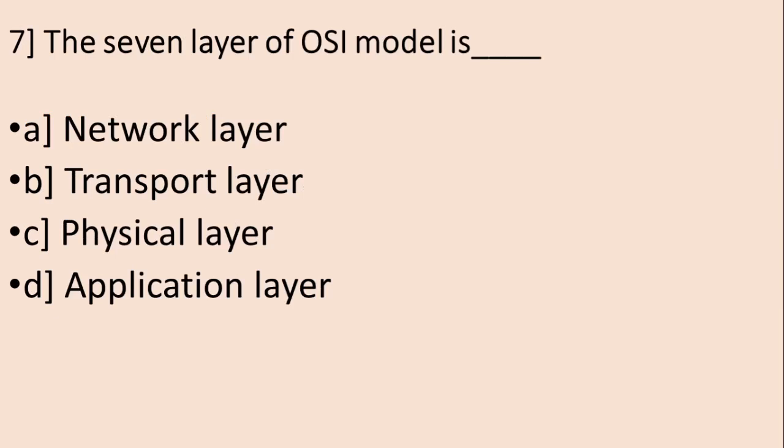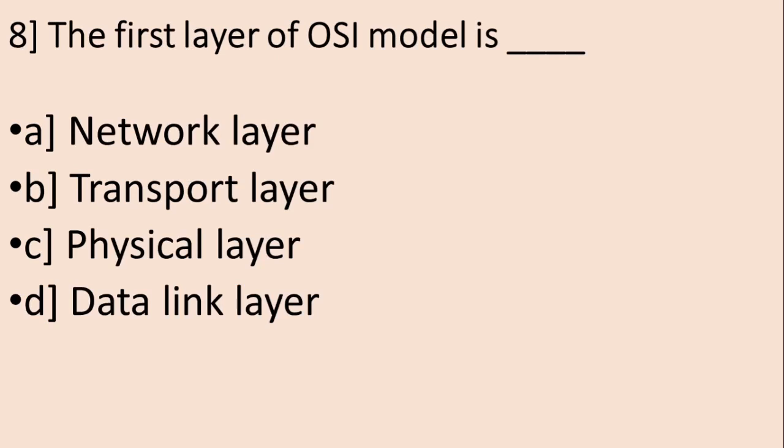Question number 7: Which of the following is one of the 7 layers of the OSI model? A. Network Layer, B. Transport Layer, C. Physical Layer, D. Application Layer. The correct answer is D, Application Layer.